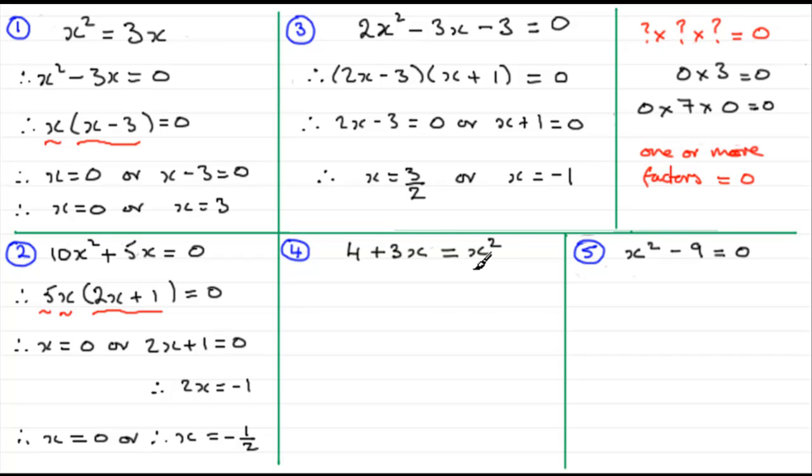For number four, I picked this one because it's not equal to zero. We need to rearrange it. And if we rearrange it by taking 4 and 3x from both sides, we would have x² - 3x - 4 = 0. And notice how we place the values. We have our x² term, then the x term, and then the constant on the end. And that will equal zero.